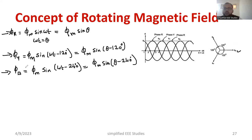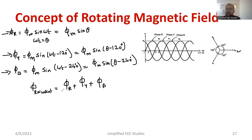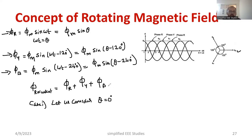So what I'm going to write is: what is the total flux? The total flux is phi resultant. Phi resultant is nothing but the combination of phi R plus phi Y plus phi B. These vectors we have to add and calculate — that will be the phi resultant. We have to consider Case 1: let's consider theta is equal to 0 degrees.